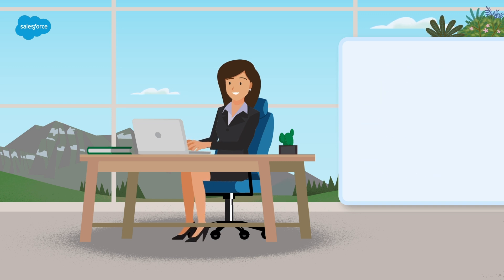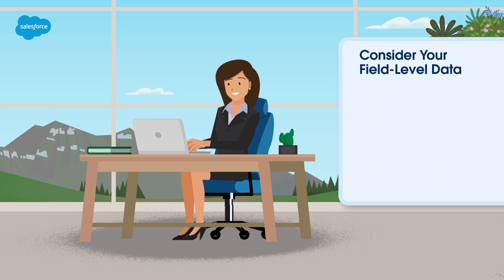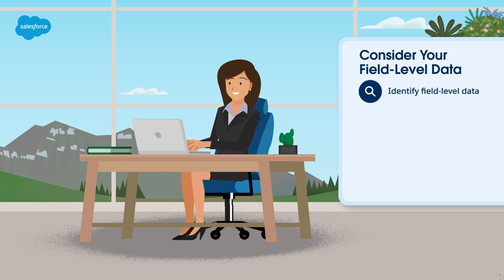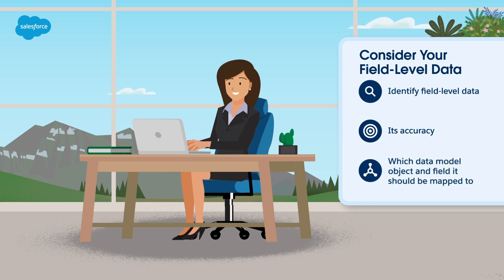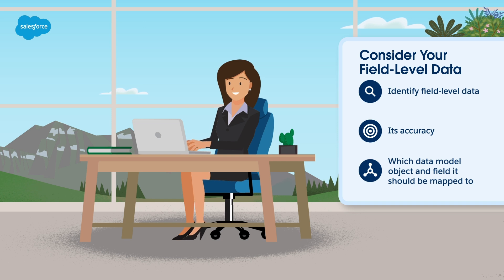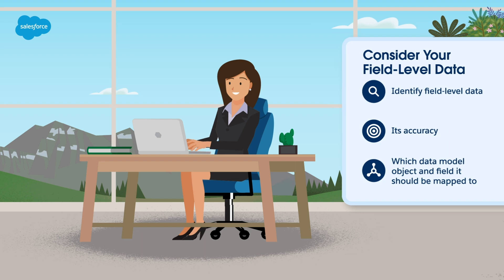Next, consider your field-level data. For each object in the data sources that will be connected, identify field-level data, its accuracy, and which data model object and field it should be mapped to. With the data dictionary in place and field-level data identified, we're ready to move on to the next phase in the data mapping process: data ingestion.